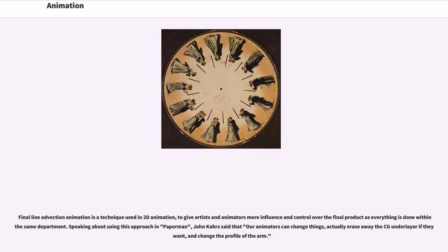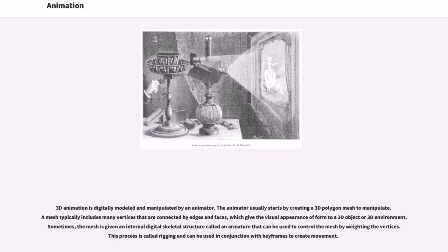Final line advection animation is a technique used in 2D animation to give artists and animators more influence and control over the final product, as everything is done within the same department. Speaking about using this approach in Paperman, John Kahrs said that animators can change things, actually erase away the CG underlayer if they want, and change the profile of the arm. 3D animation is digitally modeled and manipulated by an animator, who usually starts by creating a 3D polygon mesh. A mesh typically includes many vertices connected by edges and faces, giving the visual appearance of form to a 3D object or environment.